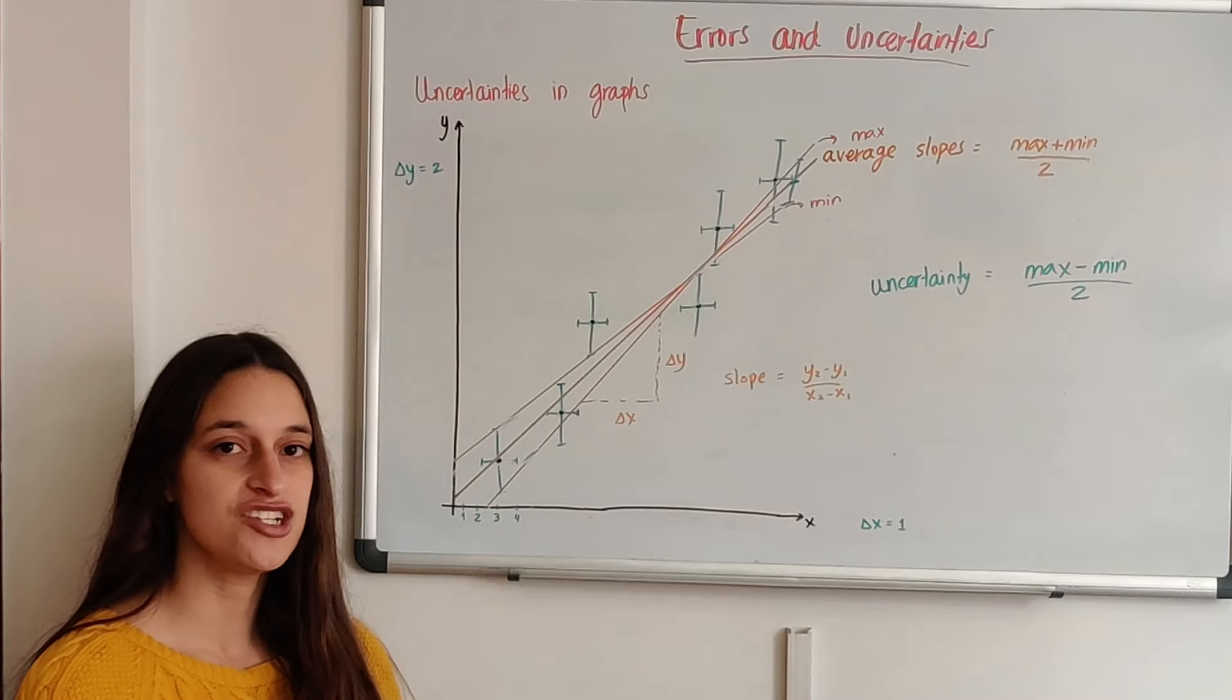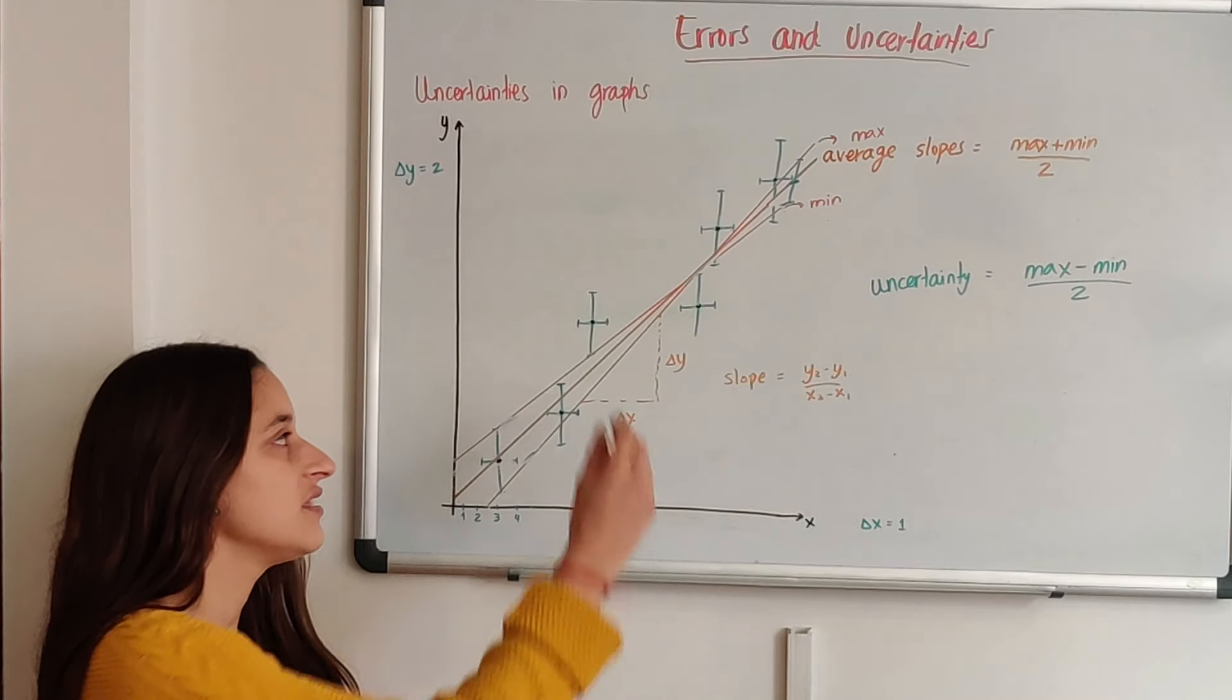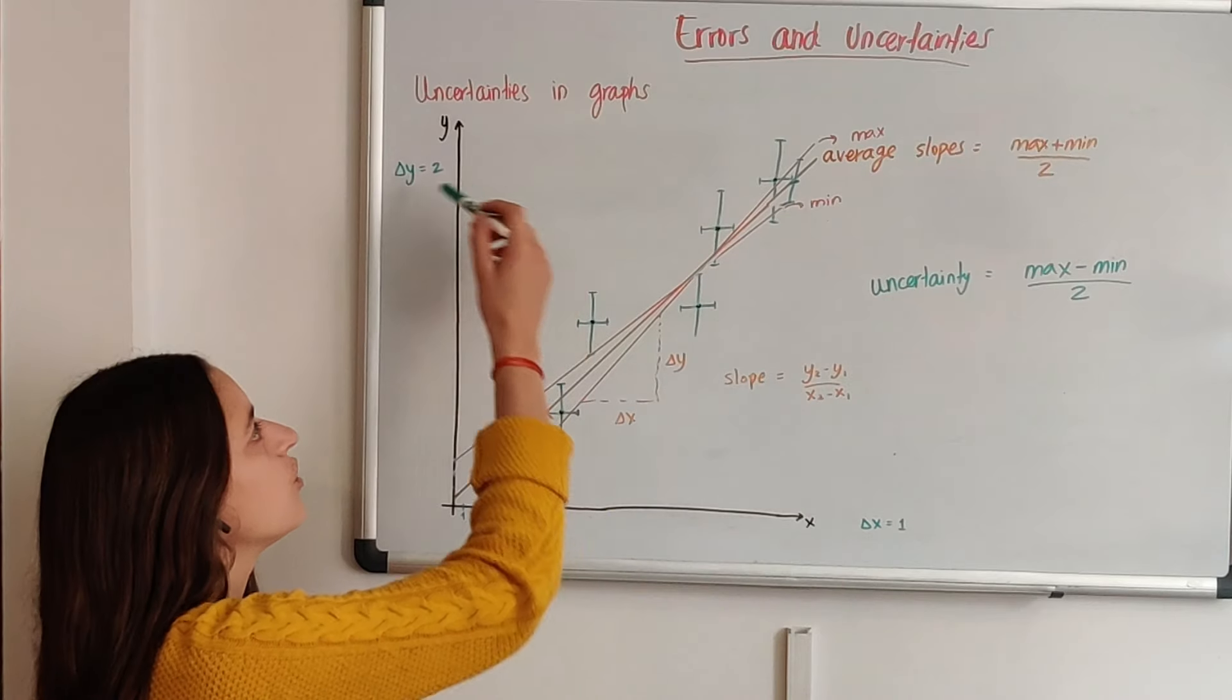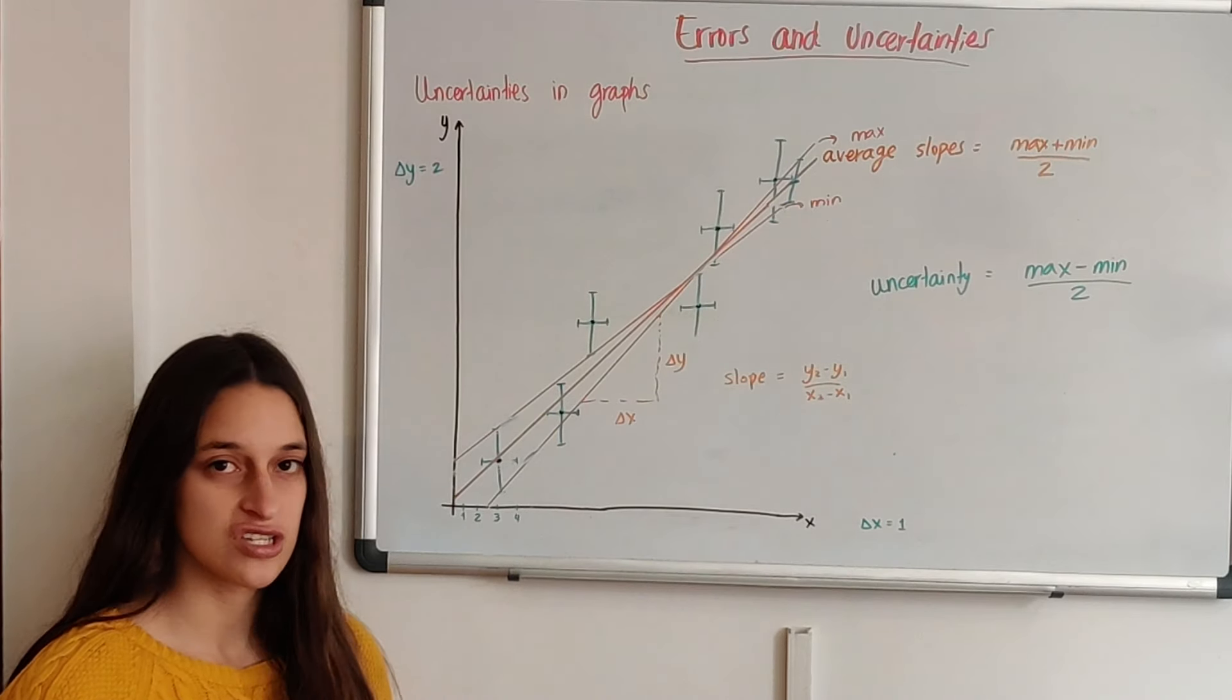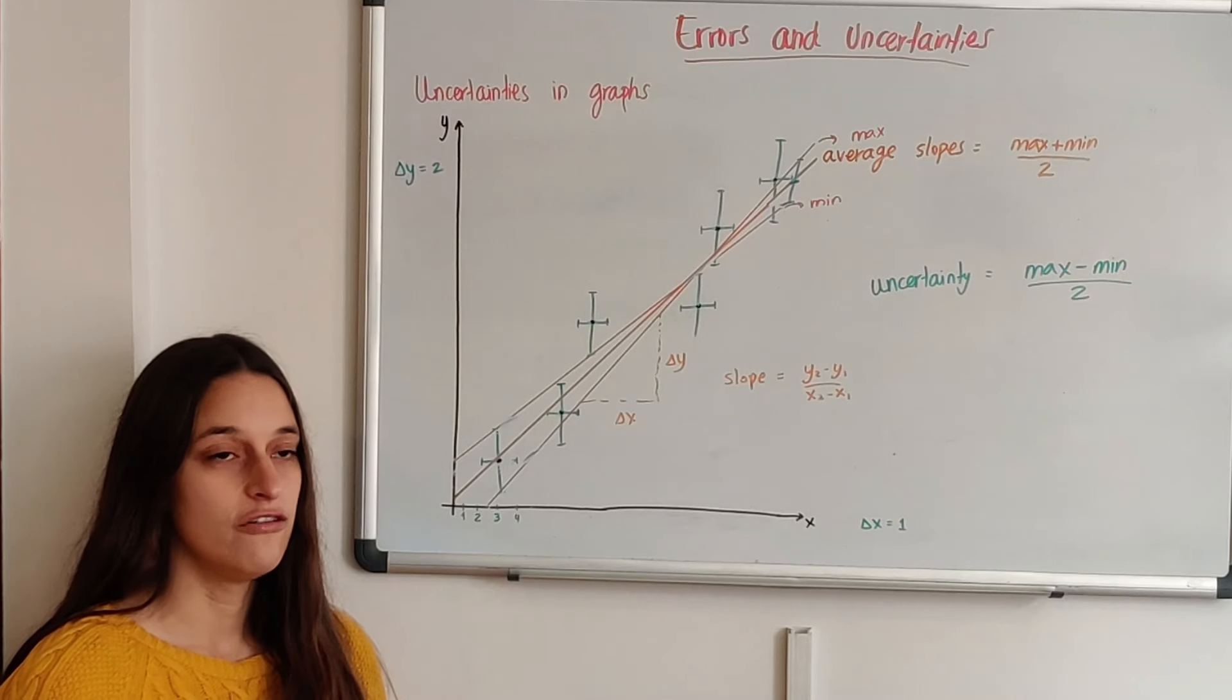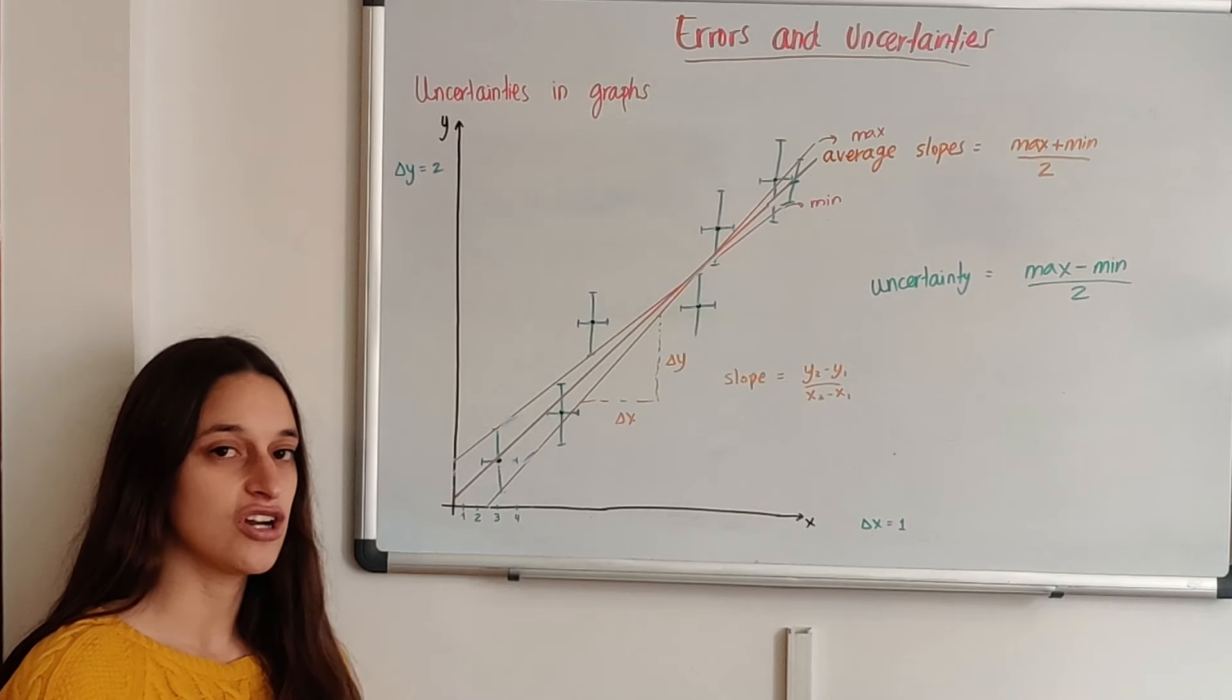And before I finish, I just want to say that these uncertainty lines of the uncertainty, like 1 and 2, are not necessarily just the uncertainty of the device that you use. The absolute uncertainties that I taught you before about how many centimeters were in a ruler, how separated the lines were.